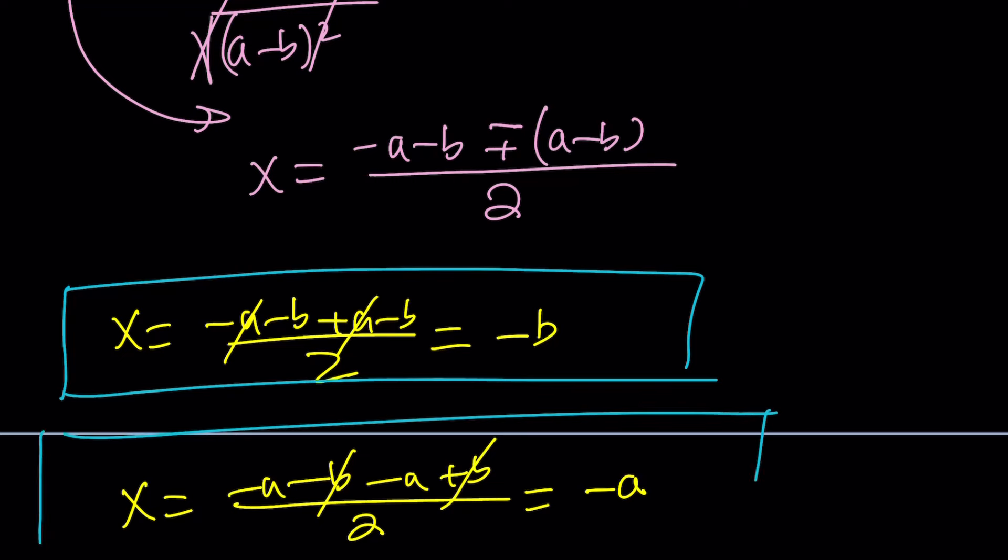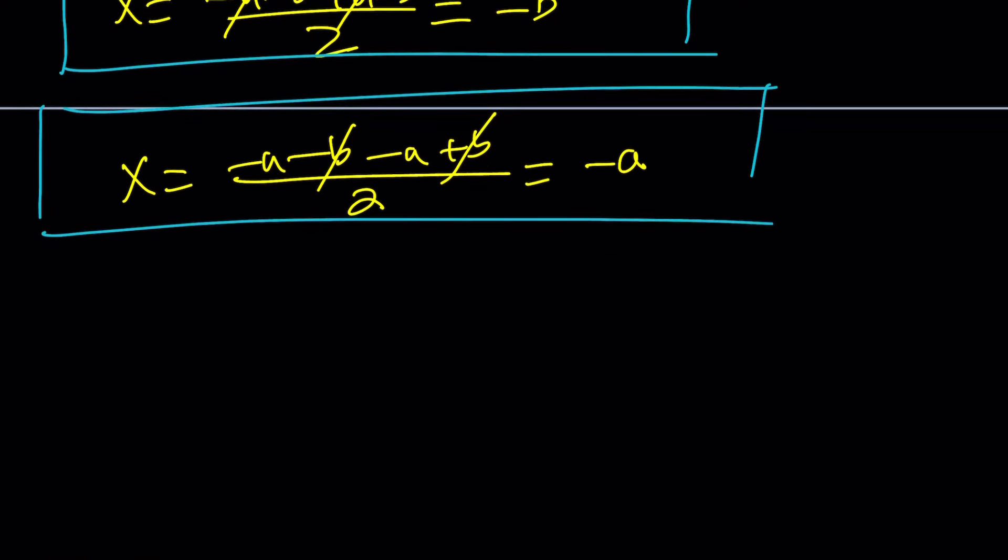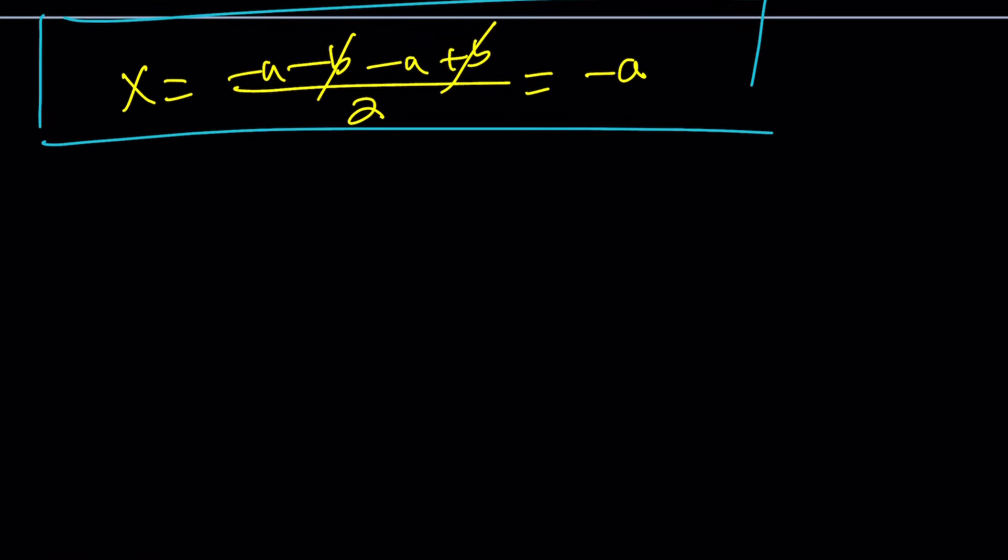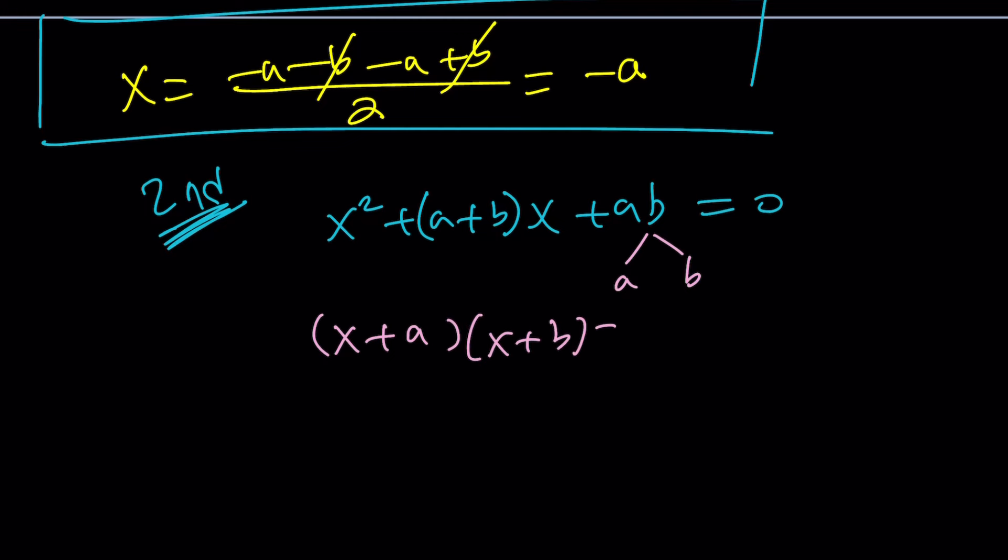But, here's my alternative, the second method. When you have an equation like this, all you have to think about is the following. This is a trinomial, right? So, you're thinking, find two numbers whose product is ab, and whose sum is a plus b. And those numbers are a and b. Easy, right? a and b. That's it. So, we can factor it as x plus a, x plus b equals 0. From here, x equals negative a and x equals negative b are solutions.